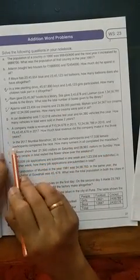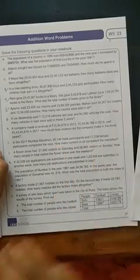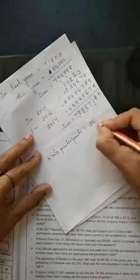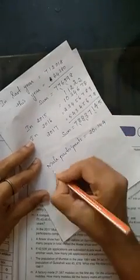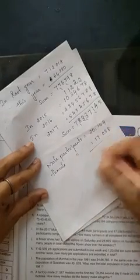Question number I. In 2017 Mumbai Marathon, 20,144 male participants and 17,038 female participants completed the race. How many runners in all completed the marathon? We want to find out the total number of these two amounts. Male participants: 20,144. Female participants: 17,038. We want to find out the sum.